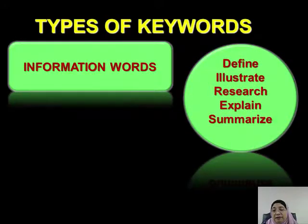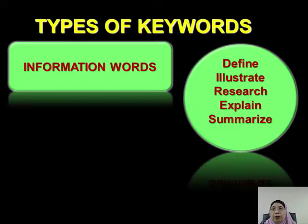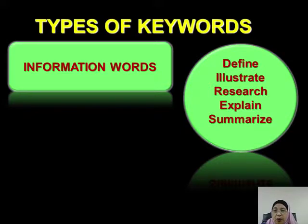Information words require that we demonstrate what you know about the subject. For example: who, what, when, where, how, and why.